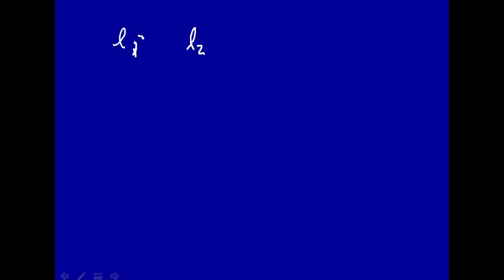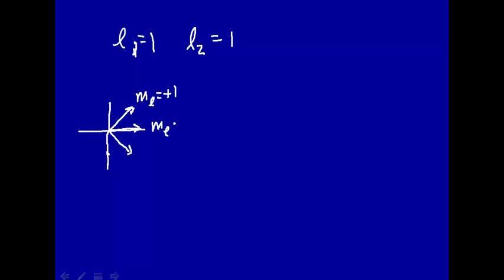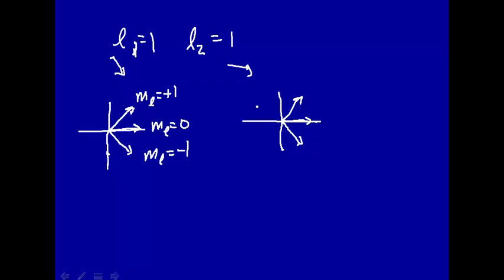Now let's look at the orbital angular momentum. Take two electrons, L1 and L2. Let's make them both p-orbital electrons, so L equal one for each. With L1 equal one, the orbital angular momentum vector can be oriented three ways: M sub L equal plus one, zero, or minus one. This comes from the spatial quantization of angular momentum. We have the same picture for the second electron with L2 equal one.